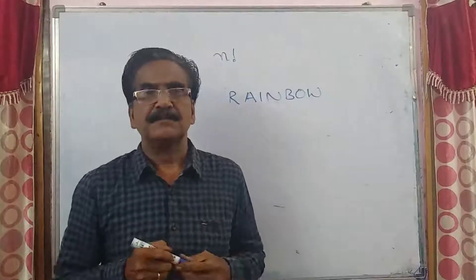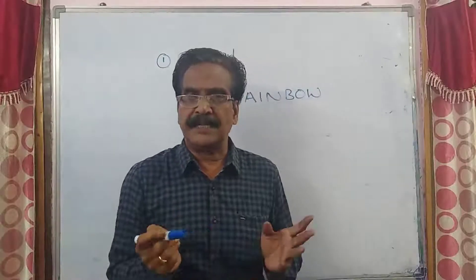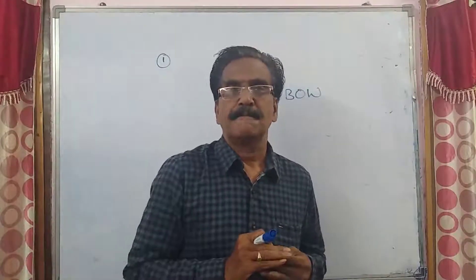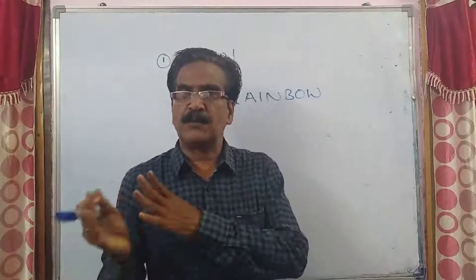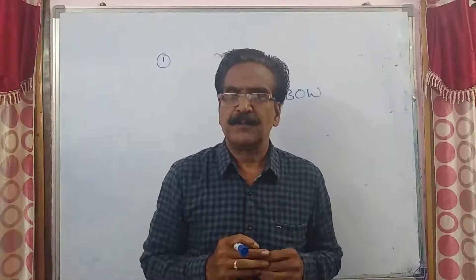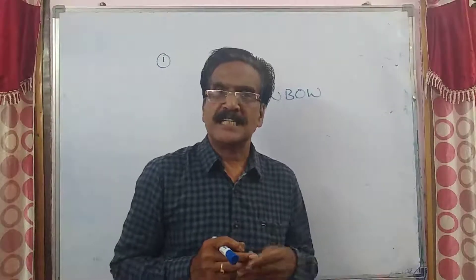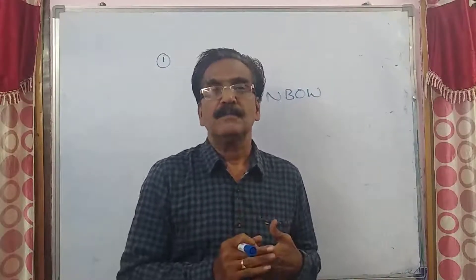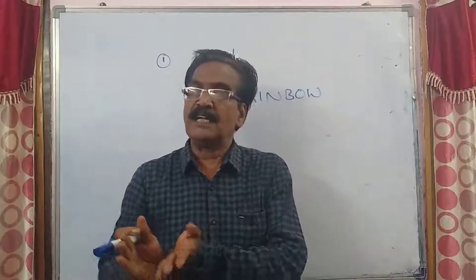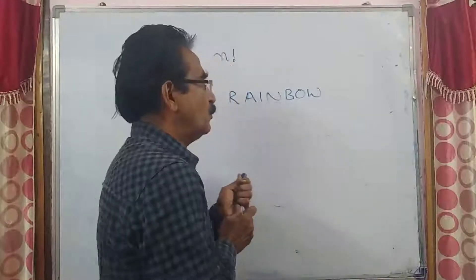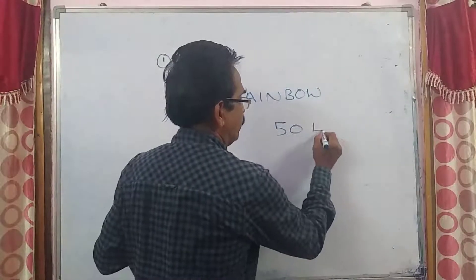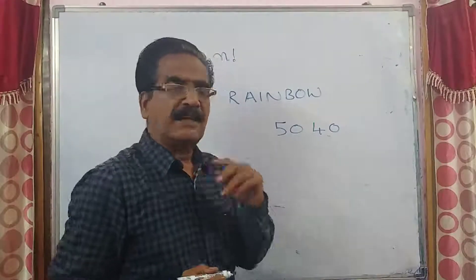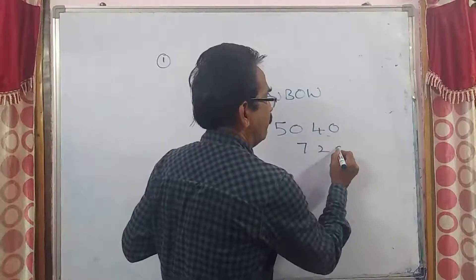The next problem: in how many ways can the letters of the word RAINBOW be rearranged such that vowels never come together? The total permutations we found were 5040. These total permutations include cases where vowels come together and cases where they never come together. Out of these 5040 permutations, 720 arrangements have vowels together — as found in the previous problem.